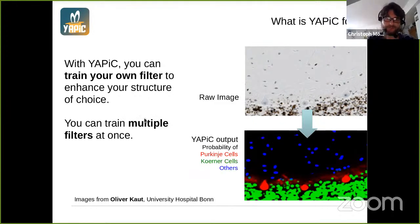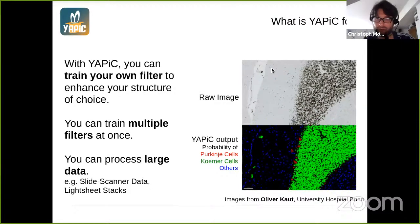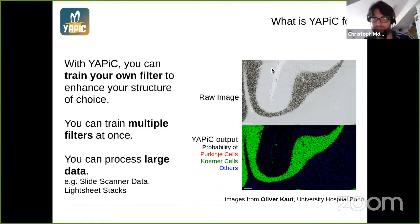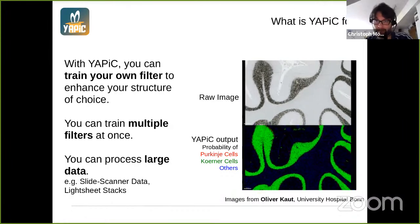You can also train a model to enhance more than one structure. For example, we trained a model where we get one cell type in red, then cells in the dense region, then cells in the dark region. You can also apply this to very large images — for example, to a whole brain slice.